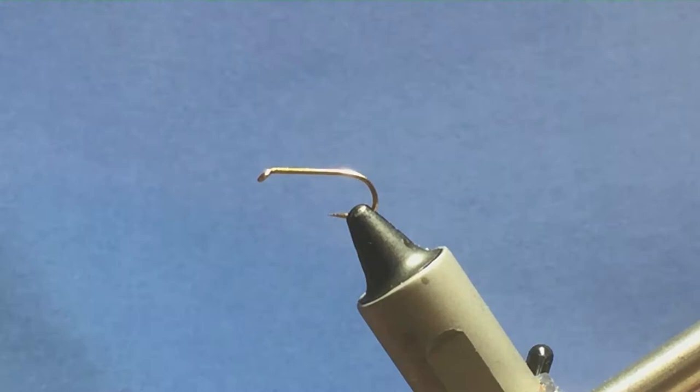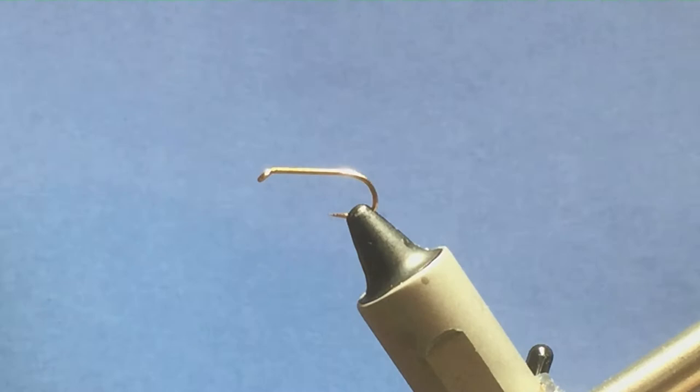Okay folks, so I'm going to tie a wee duck fly pattern. The hook I have on the vise is a size 10 standard heavyweight wet fly hook. Now you can tie these down to obviously size 14 depending on the species that are hatching off the loch at the time.